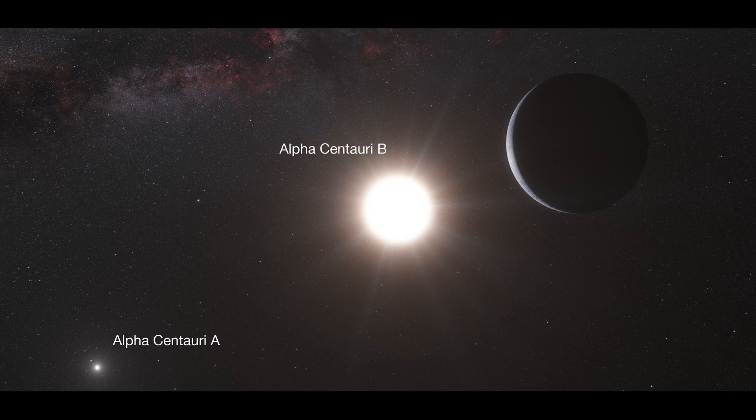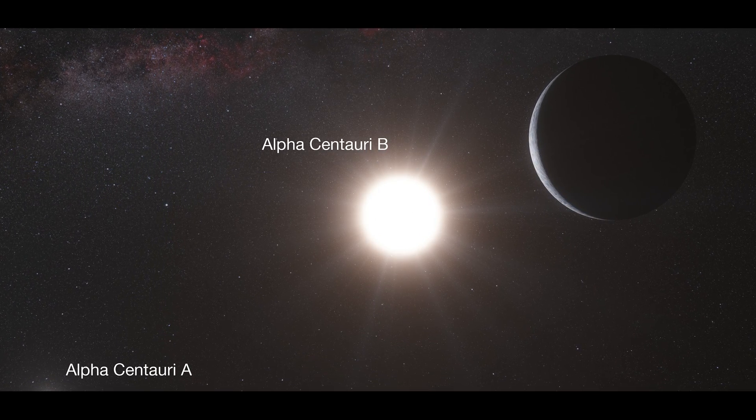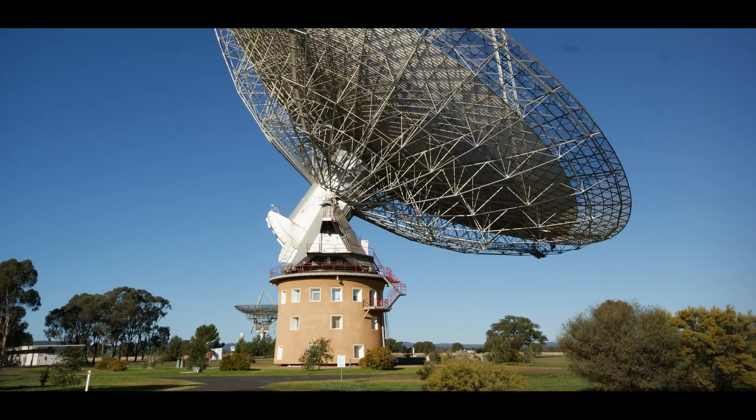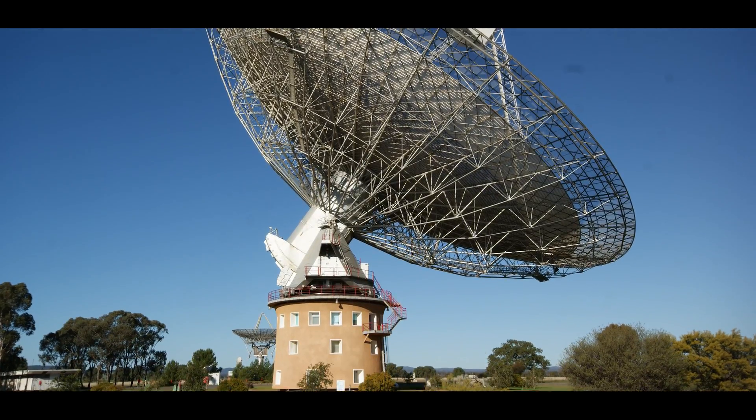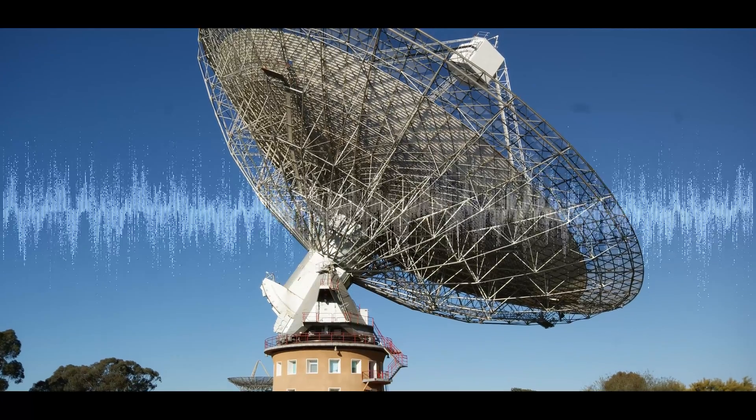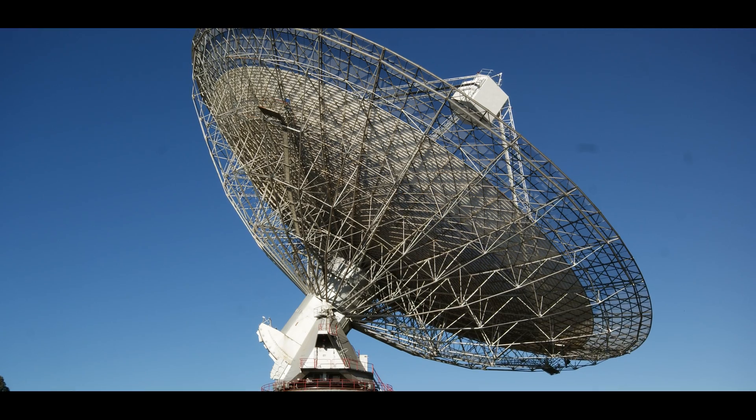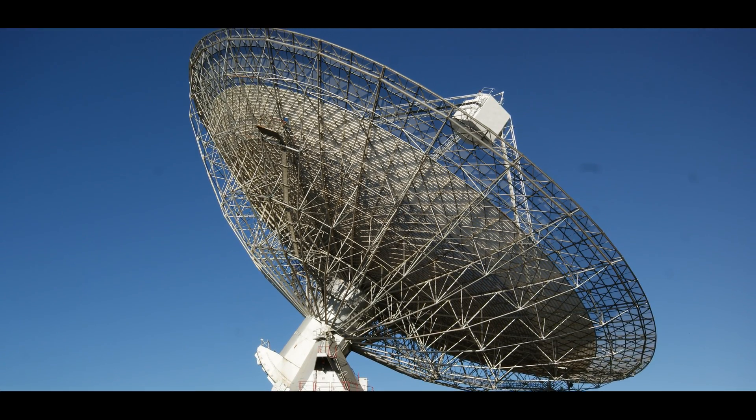An exoplanet formally announced around Alpha Centauri B turned out to be a spurious signal a few years later. It may be interesting to mention that in December 2020, mysterious signals on a frequency of about 982 megahertz were received from this system at the Australian Parkes Observatory, of which nobody knows yet what is behind it.